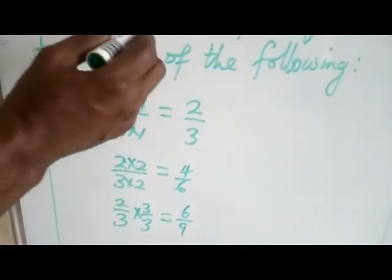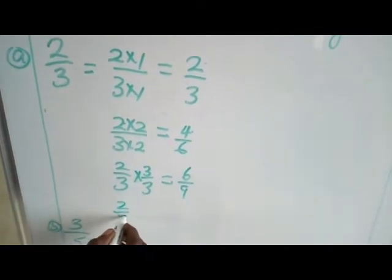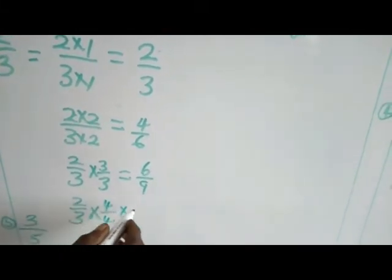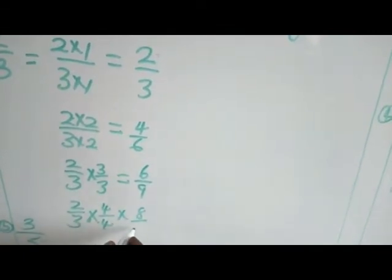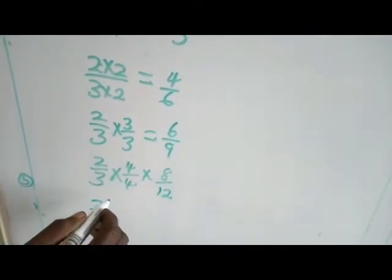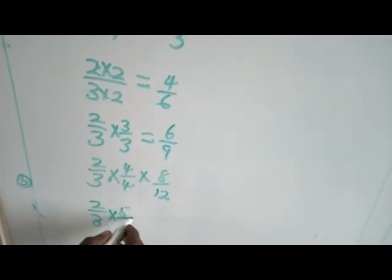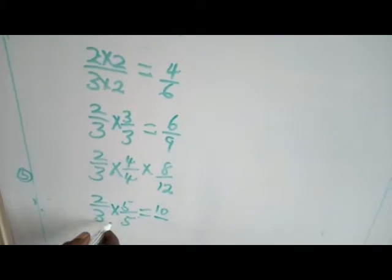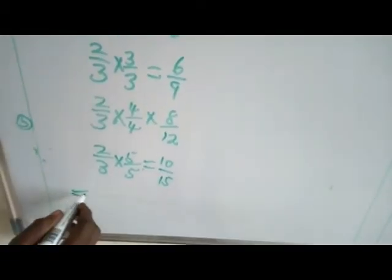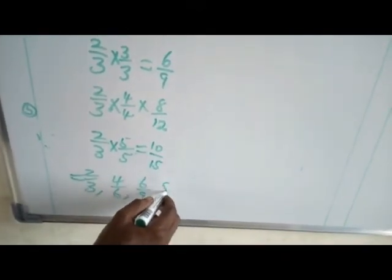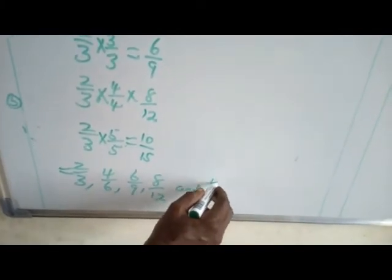We were told to find the first 5. This is the fourth one we are going to solve now. 2 over 3 times, this time around we multiply by 4. 4 over 4. So we have 2 times 4 is 8 all over 3 times 4 which is 12. And the last one, we multiply by 5. So we have 5 over 5. 2 times 5 is 10 all over 3 times 5 which is 15.